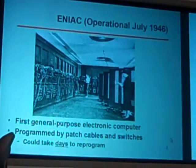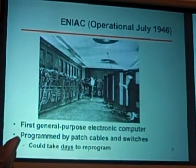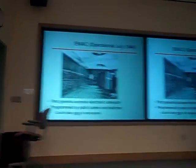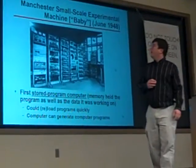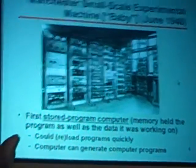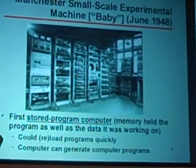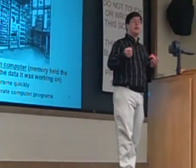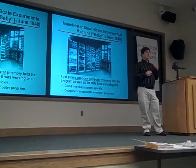Let me start with the ENIAC, which was operational in July 1946. It's widely considered to be the first general-purpose electronic computer. The challenge was that it was programmed by patch tables and switches — incredibly painful, taking days to change programs. The Manchester Small Scale Experimental Machine, operational in June 1948, was the first stored-program computer, where memory is used both for programs and for data — a major step forward. A computer could now generate computer programs.